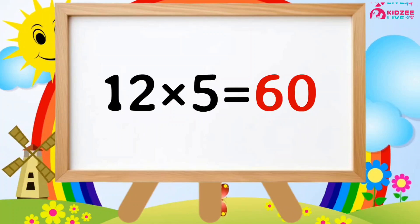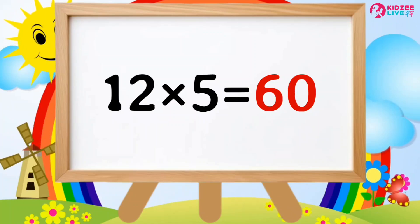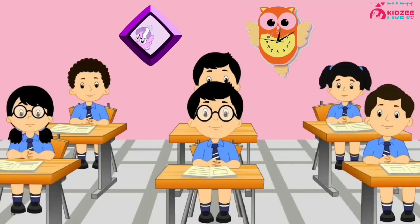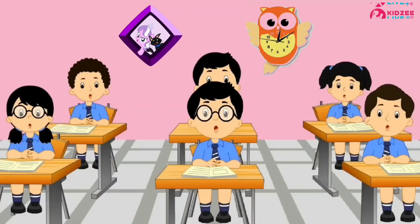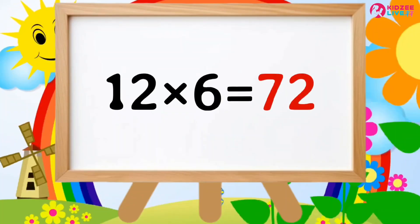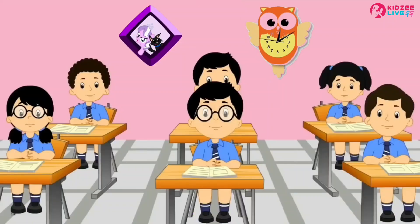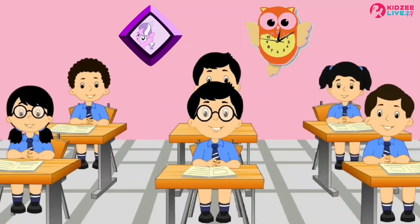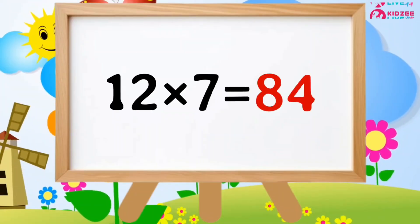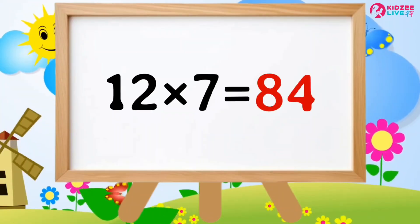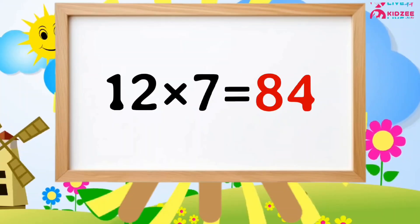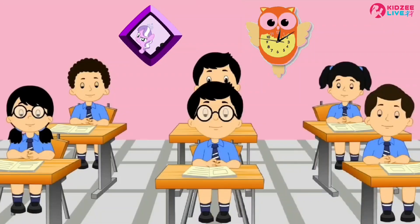12 5's a 60. 12 6 are 72. 12 7's are 84.